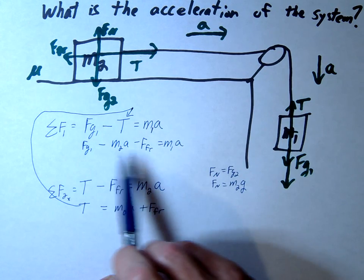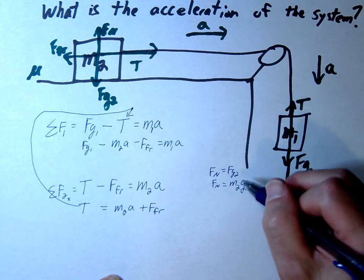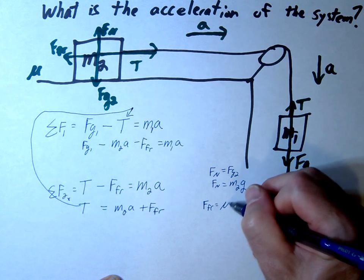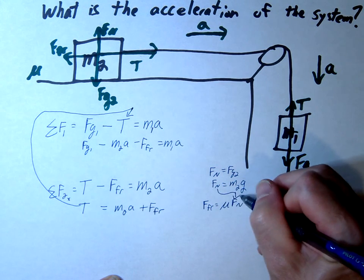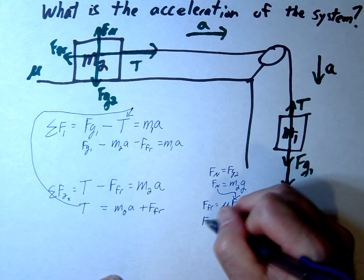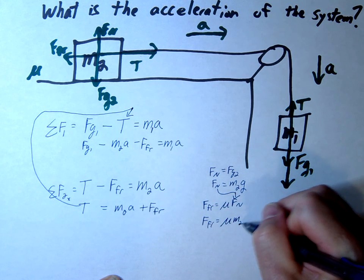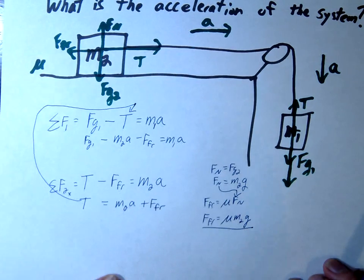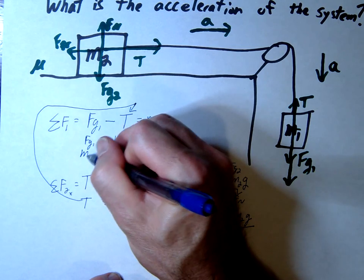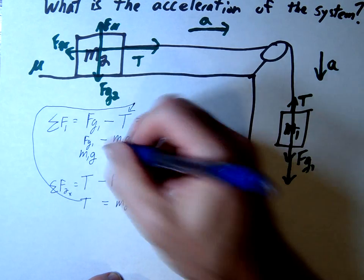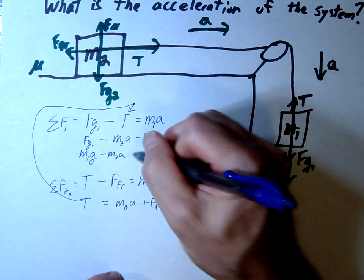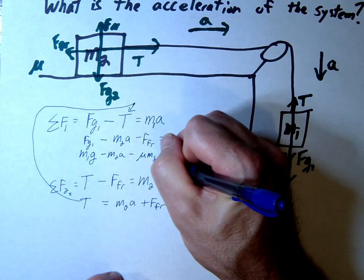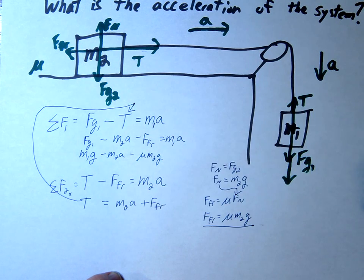Let's make some substitutions. FG is simply mg. Friction is mu times the normal force, so friction equals mu times m2g. FG1 becomes m1g. So we have m1g minus m2a minus mu times m2g equals m1a.